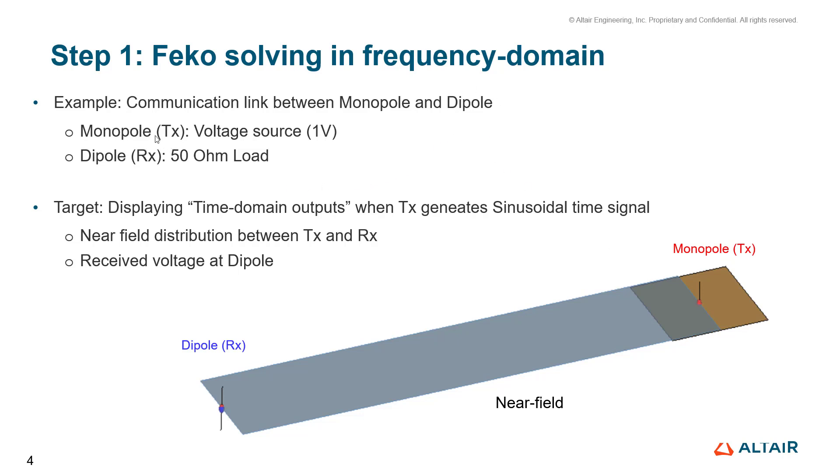Monopole works as TX transmitter antenna with a voltage source, and dipole works as RX receiver antenna. We apply 50 ohm to terminate the dipole. The target is to display time domain outputs when TX generates a sinusoidal time signal. And we are going to display near-field distribution between TX and RX and receive the voltage at dipole in time domain.